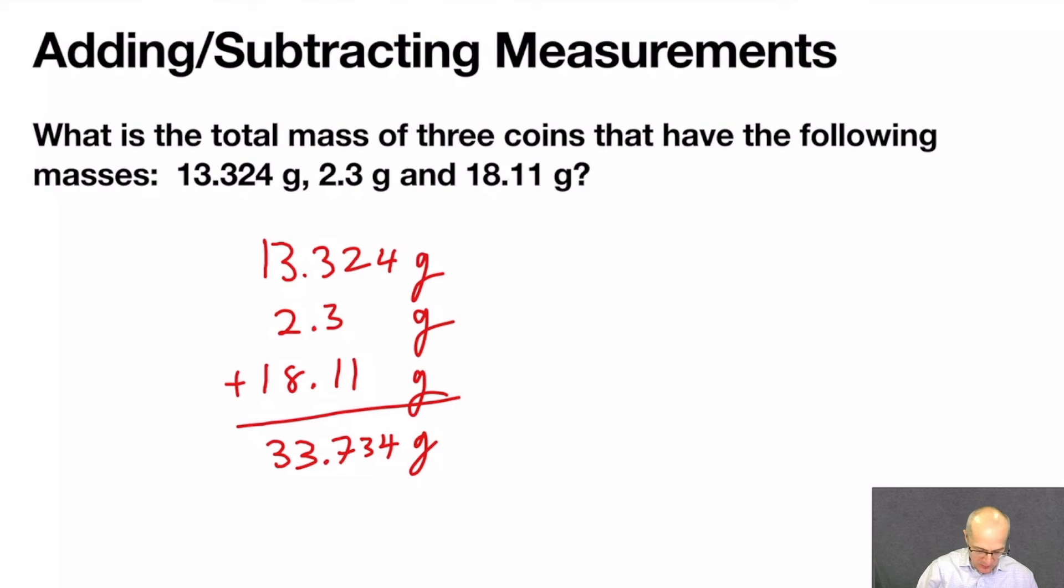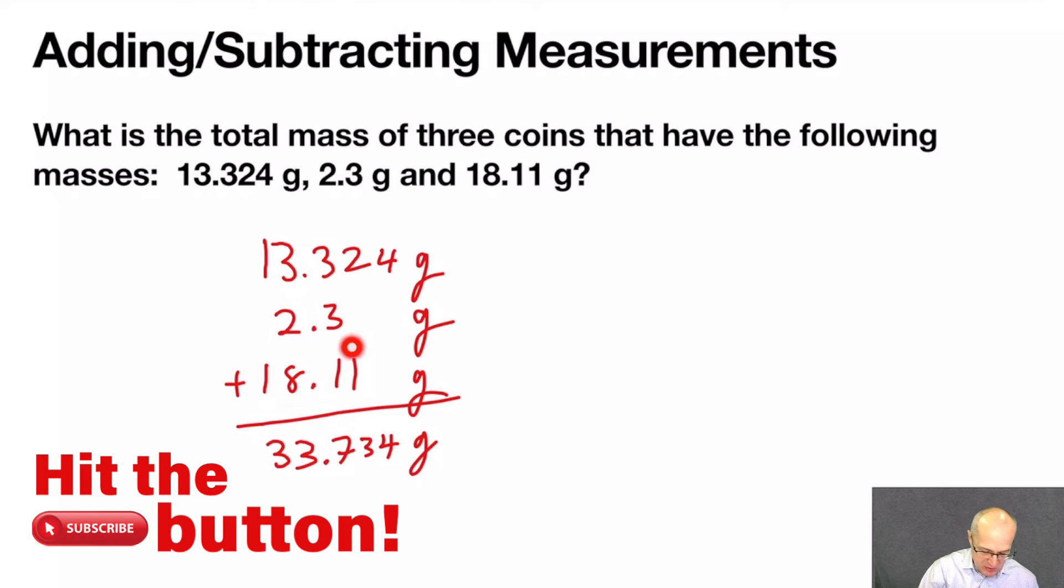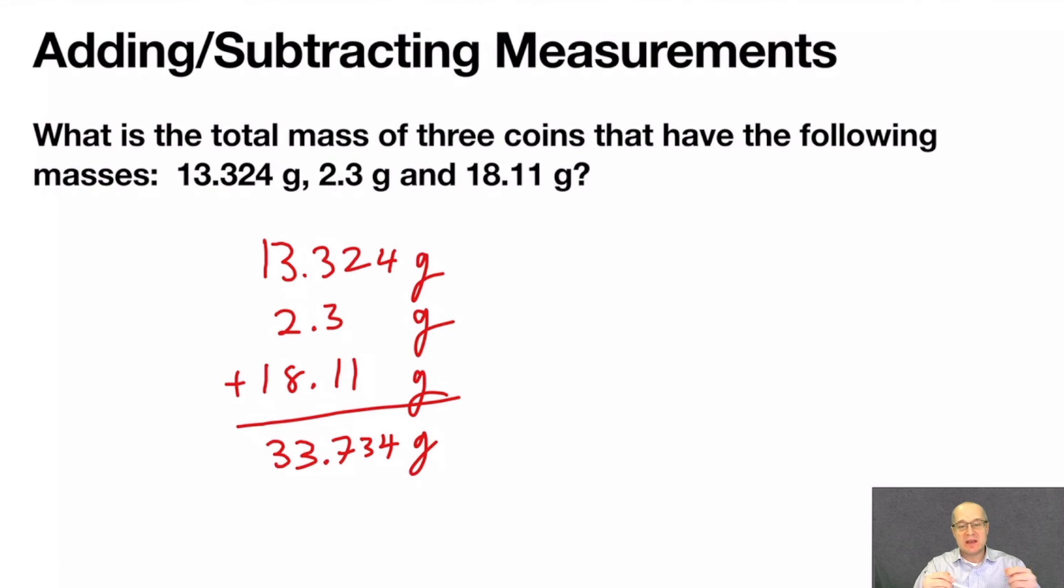So here, we have three decimal points, one, and two decimal points. We must round our answer to one decimal point because it's the measurement with the fewest decimal points. So the final answer would be 33.7 grams.